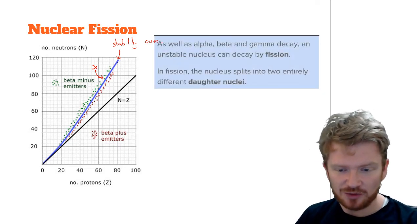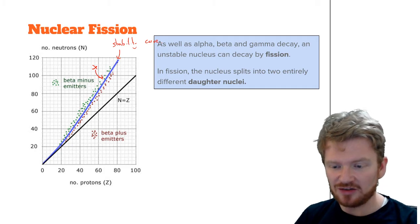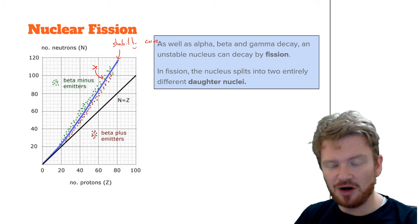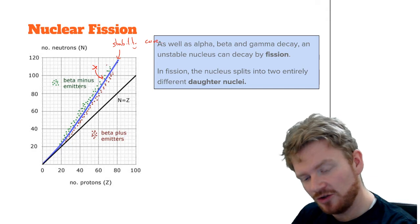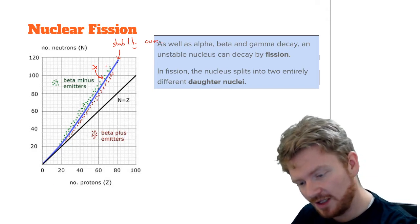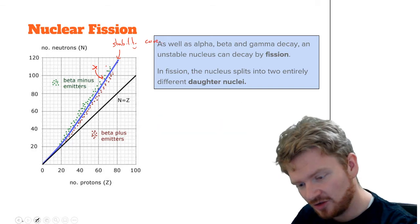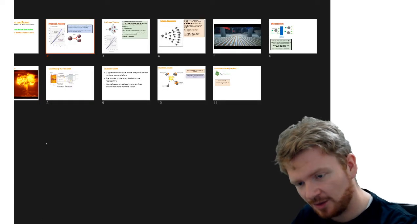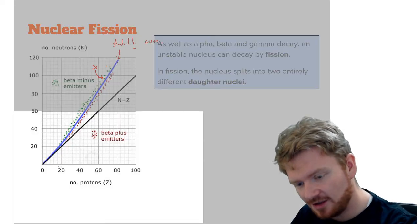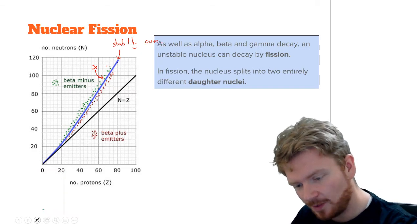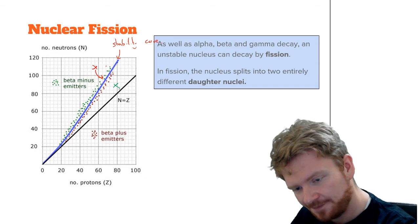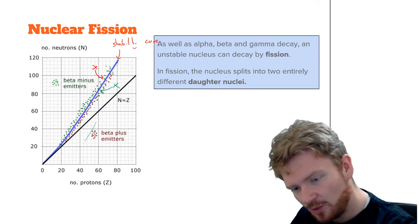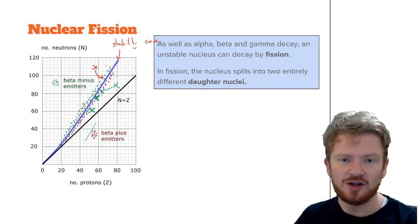But it turns out that as well as doing that, a nucleus can actually break apart entirely and become two completely new things. So it can go from being one nucleus by itself, let's say somewhere over here, and it can turn into one nucleus here and one nucleus here. So two lighter nuclei.